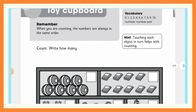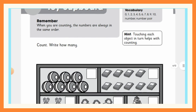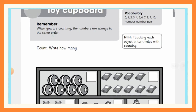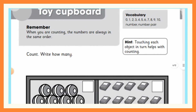Number one: there is a toy cupboard. Remember, this means they are giving us a hint — they are telling us something. What they are telling us is that when you are counting, the numbers are always in the same order. What does 'same order' mean? Let's go back to the vocabulary and revise a little bit of our lesson.